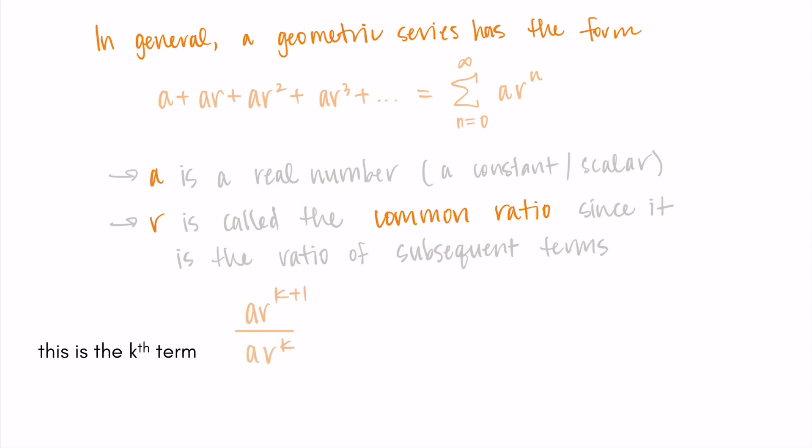So if we do ar^(k+1) divided by ar^k, where k is just one of the indices, I can rewrite r^(k+1) as r^k times r, and then I have an ar^k in both the numerator and the denominator, which will cancel, leaving me with r. So calling it the common ratio is just something we do to give us a language to talk about it.